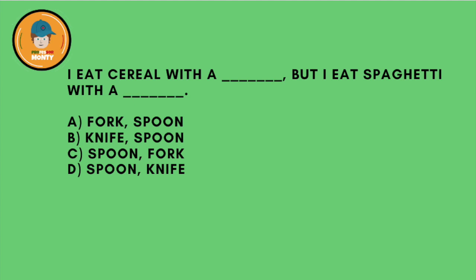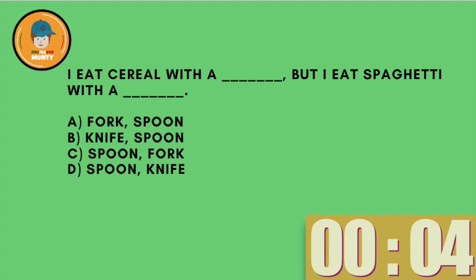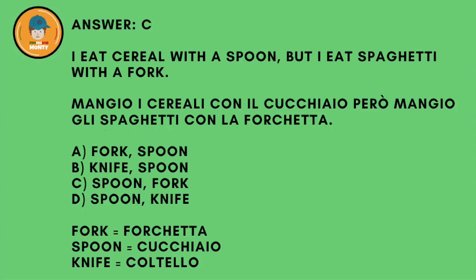I eat cereal with a mmm, but I eat spaghetti with a mmm. A: fork, spoon. B: knife, spoon. C: spoon, fork. D: spoon, knife. And the answer is C. I eat cereal with a spoon, but I eat spaghetti with a fork. Spoon — cucchiaio — fork.